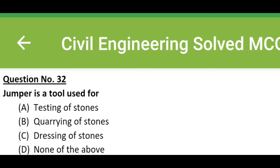Option C, cross joint. Option D, bonded joint. The correct answer is option C, cross joint. Jumper is a tool used for: Option A, testing of stones. Option B, quarrying of stones. Option C, dressing of stones. Option D, none of the above. The correct answer is option B, quarrying of stones.